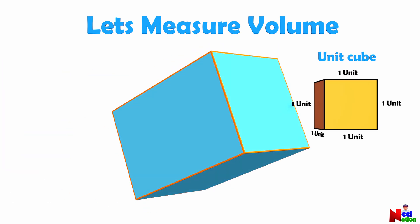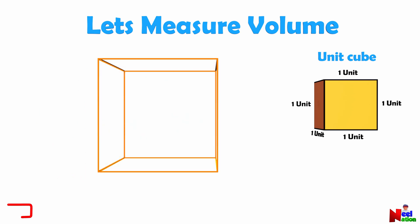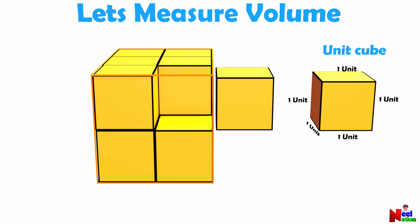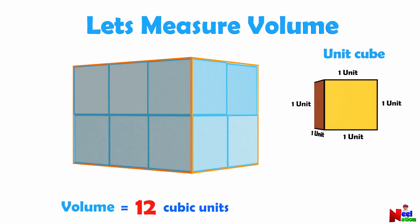Let's measure the volume of this cuboid or rectangular prism using unit cubes. One, two, three, four, five, six, seven, eight, nine, ten, eleven, twelve. The volume of this cuboid is 12 cubic units.